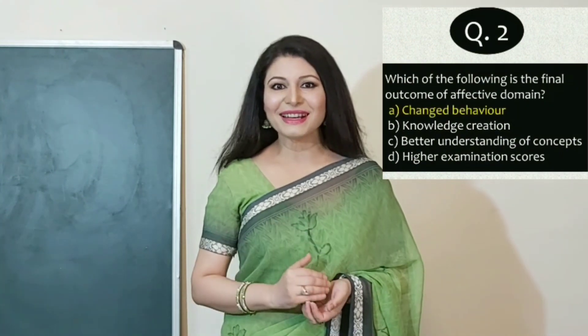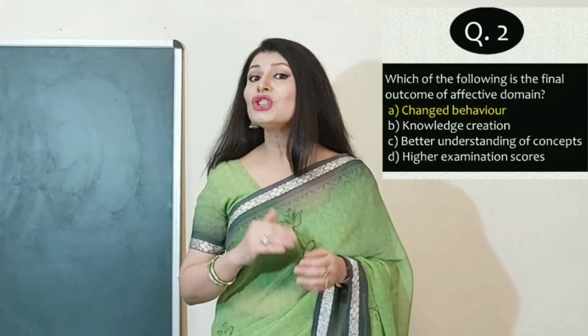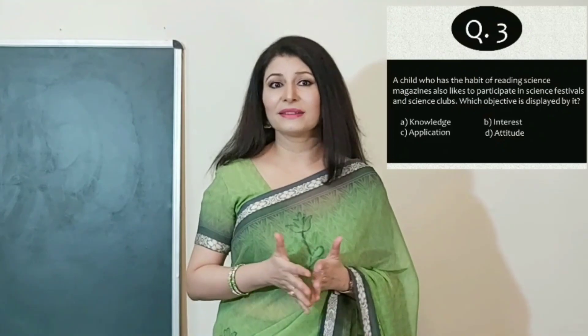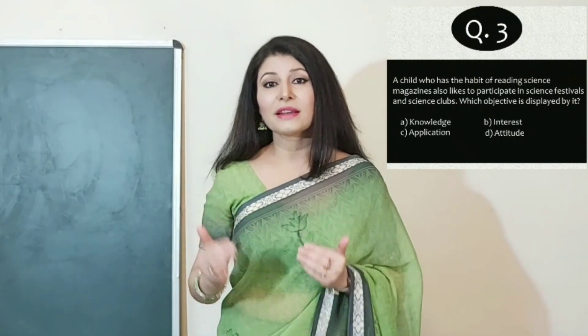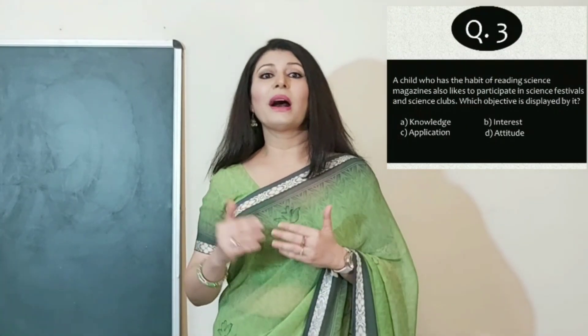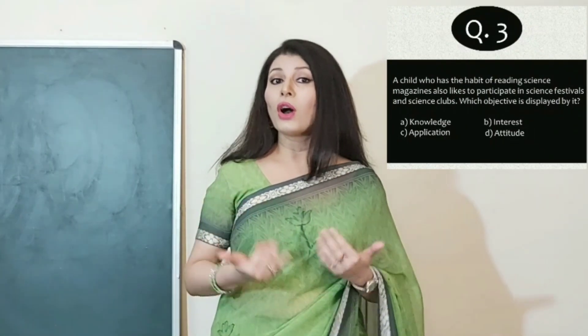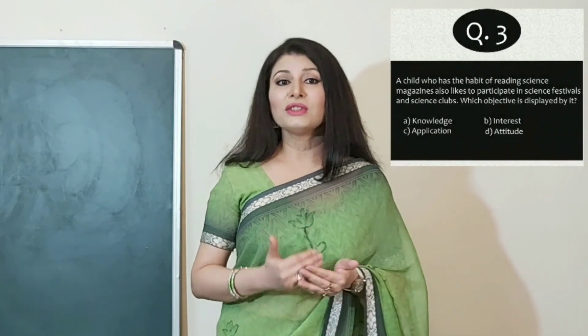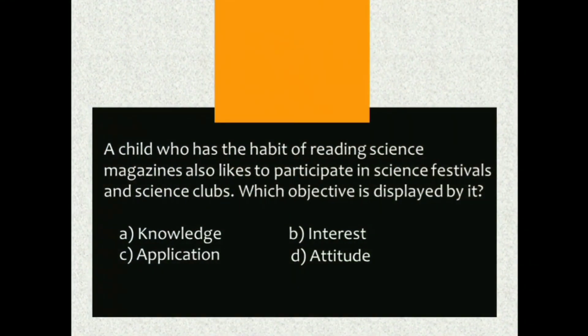The answer is A — changed behavior. Question 3: A child who has the habit of reading science magazines also likes to participate in science festivals and science clubs. Which objective is displayed by this? A) Knowledge, B) Interest, C) Application, or D) Attitude.